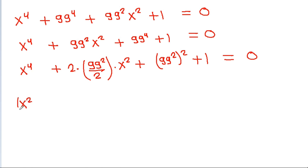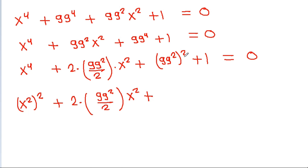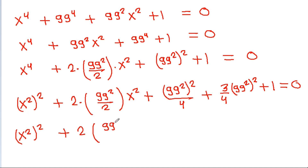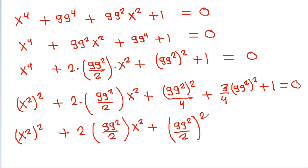And x⁴ plus 2 times (99²/2) times x² plus (99²/2)² minus (99²/2)² minus 99⁴ minus 1 is equal to 0. Rearranging: (x² + 99²/2)² minus (3/4) times 99⁴ minus 1 is equal to 0.